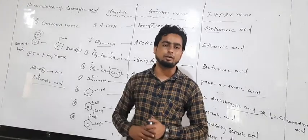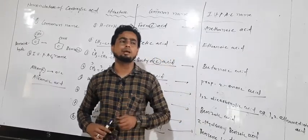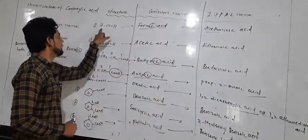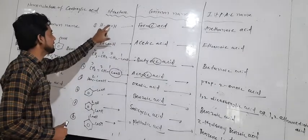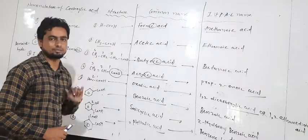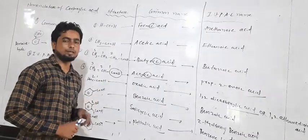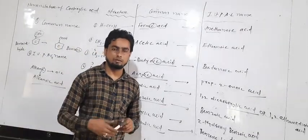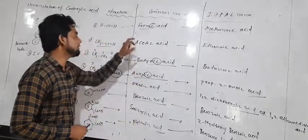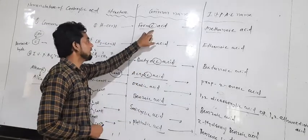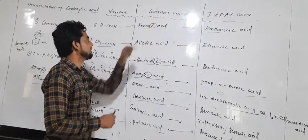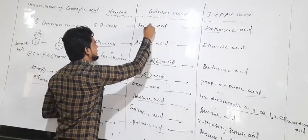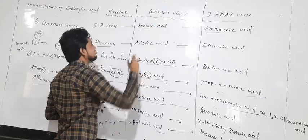We take examples of different types of carboxylic acids and how to write their common names. The first compound is HCOOH, called formic acid. The name formic acid comes from 'formica,' which is present in ants. The last suffix of this compound is '-ic,' so it is called formic acid.